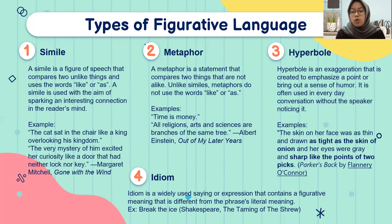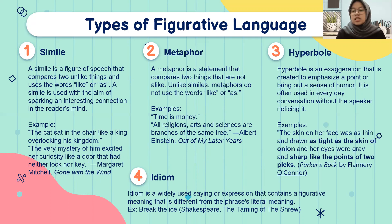The third type is hyperbole — an exaggeration that is created to emphasize a point or bring out a sense of humor, usually used in everyday conversation. An example from literature: 'The skin on her face was as tight as the skin of an onion.' The phrase 'as tight as the skin of an onion' refers to the skin on her face, describing how very thin and round it was — exaggerated for effect.